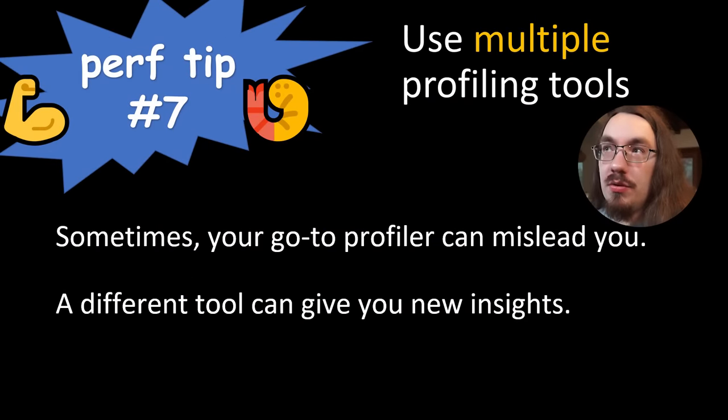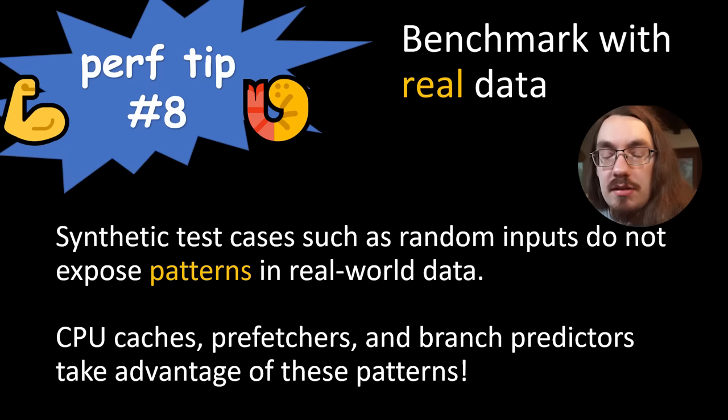Perf tip number seven, use multiple profiling tools. I wasn't able to notice the branch miss issue until I used perf stat rather than perf record or v-tune. Sometimes your profile can mislead you into thinking something is slow for one reason, even though the reason is totally different. Perf tip number eight, benchmark on real data. In my case, I was benchmarking against keywords and variable names in jQuery, which is a real world JavaScript code base. If I instead benchmarked on say just keywords or just variable names, I wouldn't have noticed the branch miss issue because it would either always pass or always fail. And if your data is always passing or always failing, that's pretty easy for a CPU to predict. Therefore you don't end up with branch misses. But because I use real world data where only 20% of identifiers are actually keywords, the CPU wasn't able to predict as well. Therefore there were a lot of branch misses and I was able to optimize for that use case. If you use fake data in your benchmarks, you might be optimizing for fake workloads rather than real workloads.